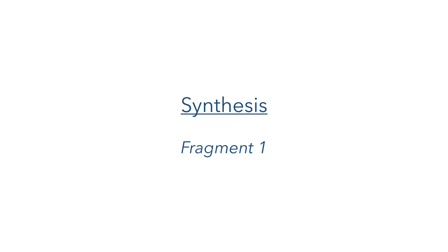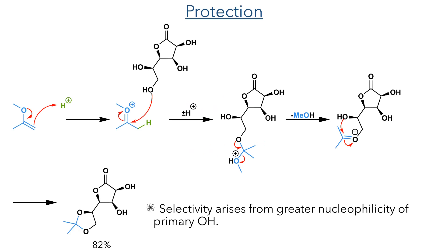The synthesis of this furan moiety starts with the selective protection of a lactone derived from D-mannose. 2-methoxypropene is first protonated by PTSA, generating an electrophilic oxonium that is preferentially attacked by the primary hydroxyl group. This then eliminates methanol, generating a new oxonium that undergoes intramolecular attack to generate the five-membered ring in an 82% yield.